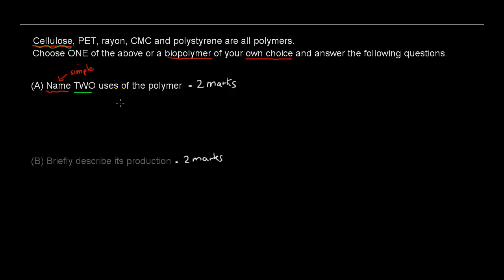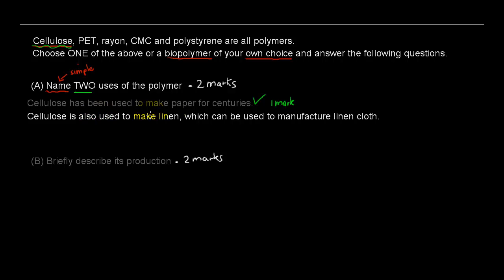With uses, we refer to what the polymer is used for in reality. I've written down the first: cellulose has been used to make paper for centuries — you would get a tick for that, one mark. A very simple answer, but you've stated one of the uses. The second one is cellulose is also used to make linen, which can be used to manufacture linen cloth — a different type of fabric like cotton or nylon. That's also a tick. You've now named two uses, one mark each, giving you two marks out of two.